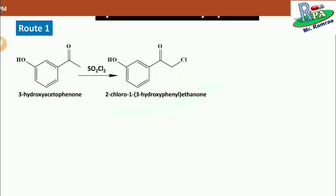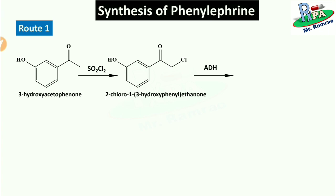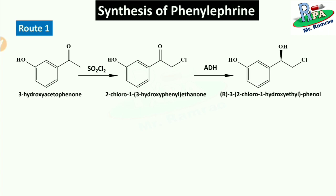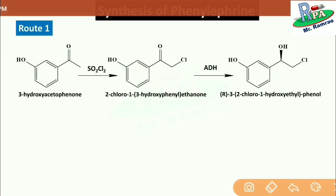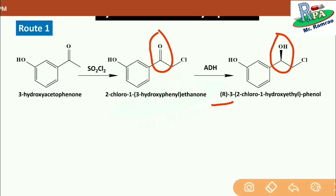In the next step, this chlorinated product undergoes reaction in the presence of the enzyme alcohol dehydrogenase and forms the product (R)-3-(2-chloro-1-hydroxyethyl)phenol. The conversion is a reduction reaction — the carbonyl group (ketone) is reduced to a hydroxyl group. Importantly, most of the compound synthesized has the R configuration, and phenylephrine has greater activity in the R configuration.